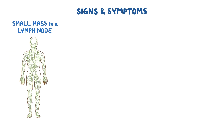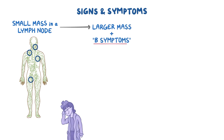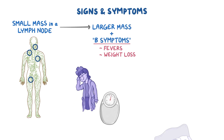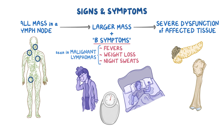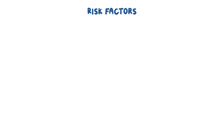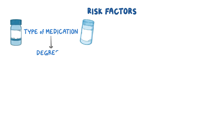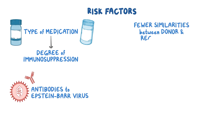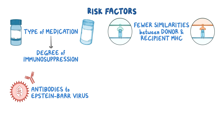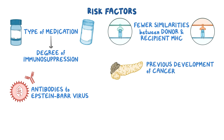Signs and symptoms of PTLDs can range from a small mass within a lymph node anywhere in the body to much larger masses along with the constitutional B-symptoms of fevers, weight loss, and night sweats that are seen in malignant lymphomas. Widespread metastasis can lead to severe dysfunction of any affected tissue. Risk factors include the type of immunosuppressive medication used and the degree of immunosuppression it causes, whether or not the person has antibodies to Epstein-Barr virus, fewer similarities between the donor and recipient major histocompatibility complexes, previous development of cancer, and being younger.